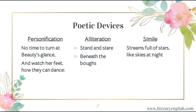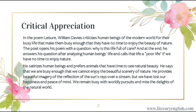Simile is a poetic device where the poet compares two unlike things by using 'like' or 'as.' In the following line for example: 'streams full of stars like skies at night.' The poet has compared the streams with the skies by using the word 'like.'